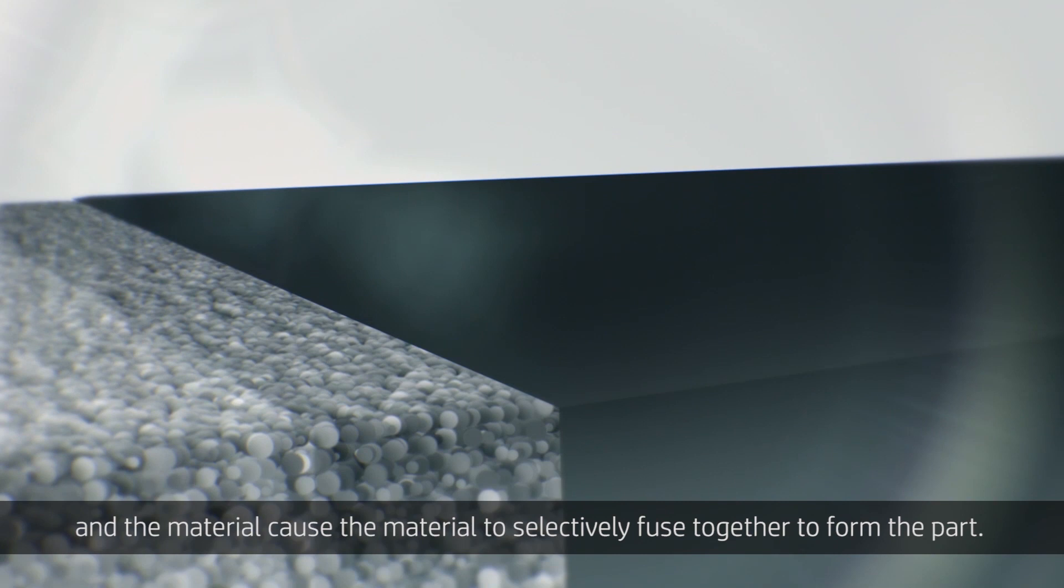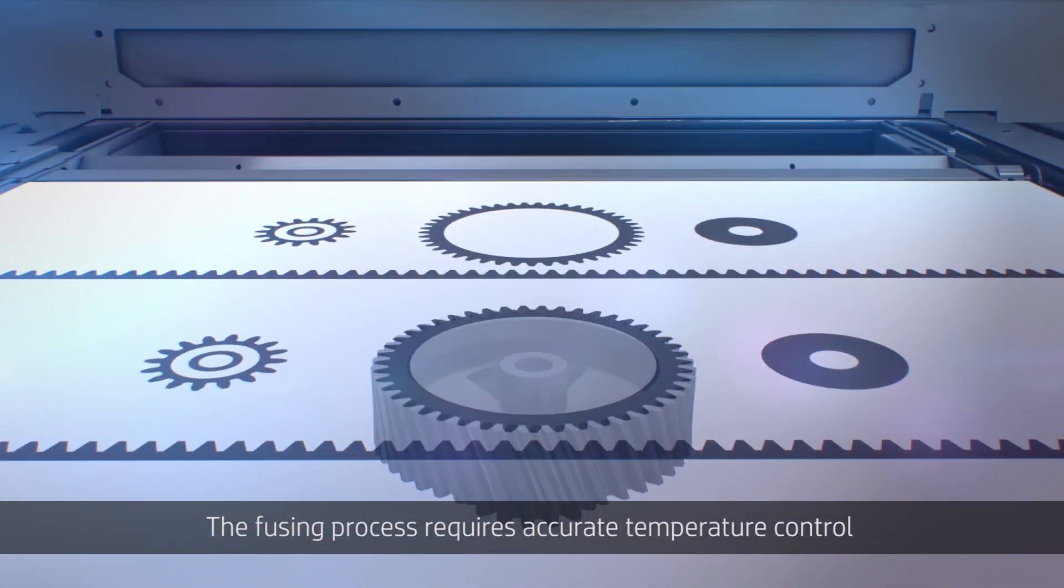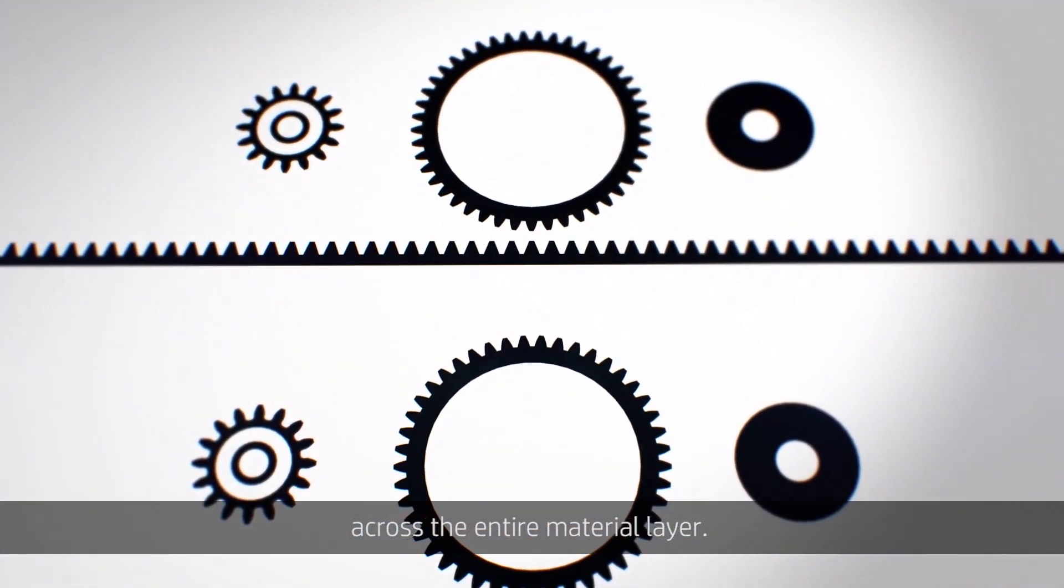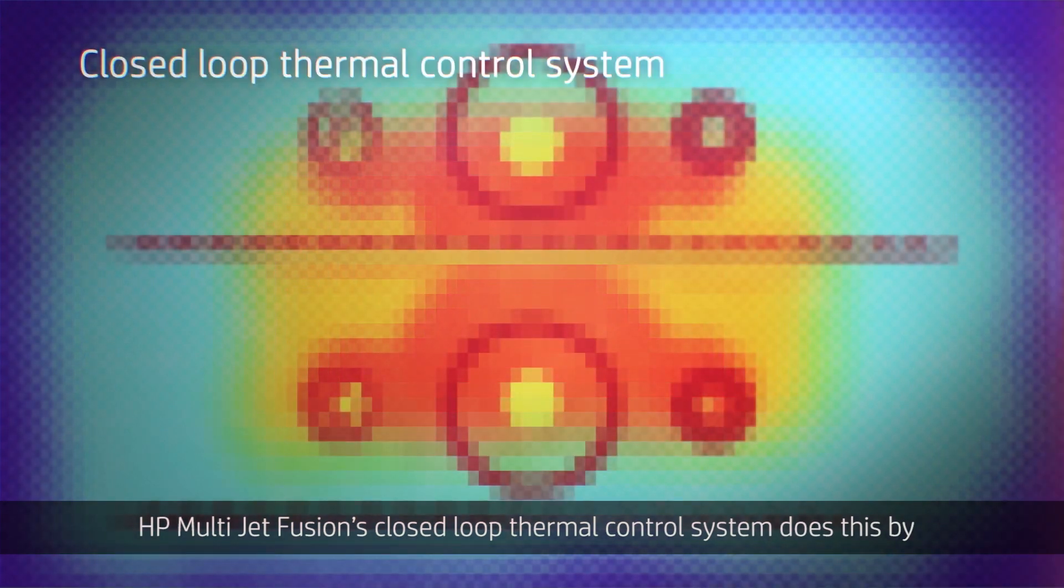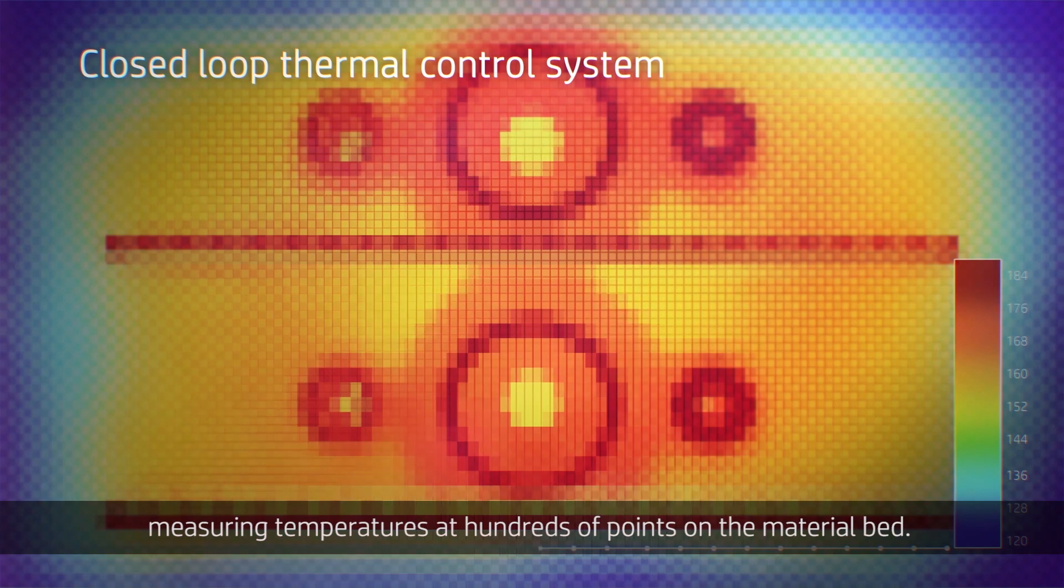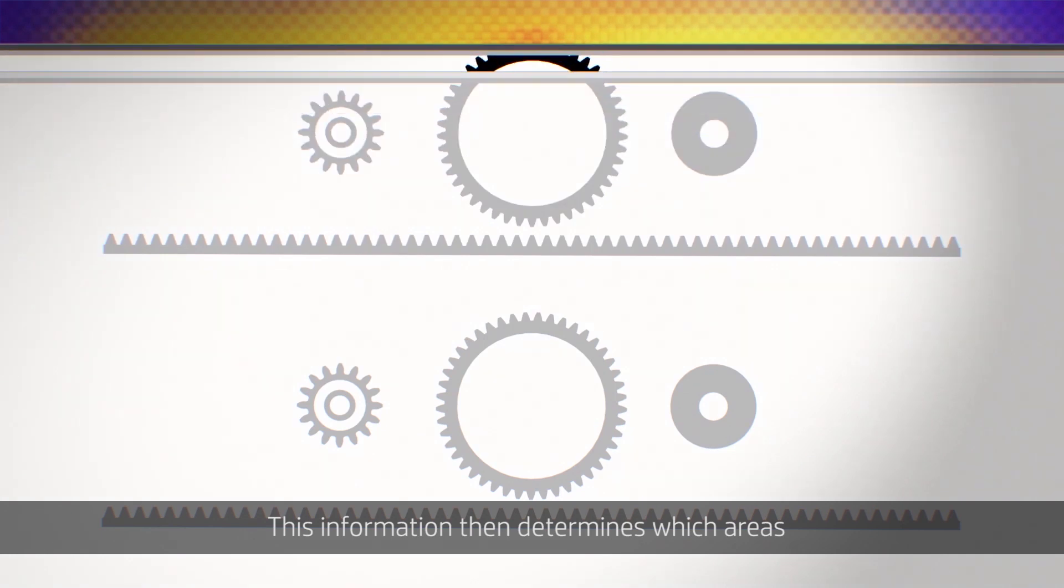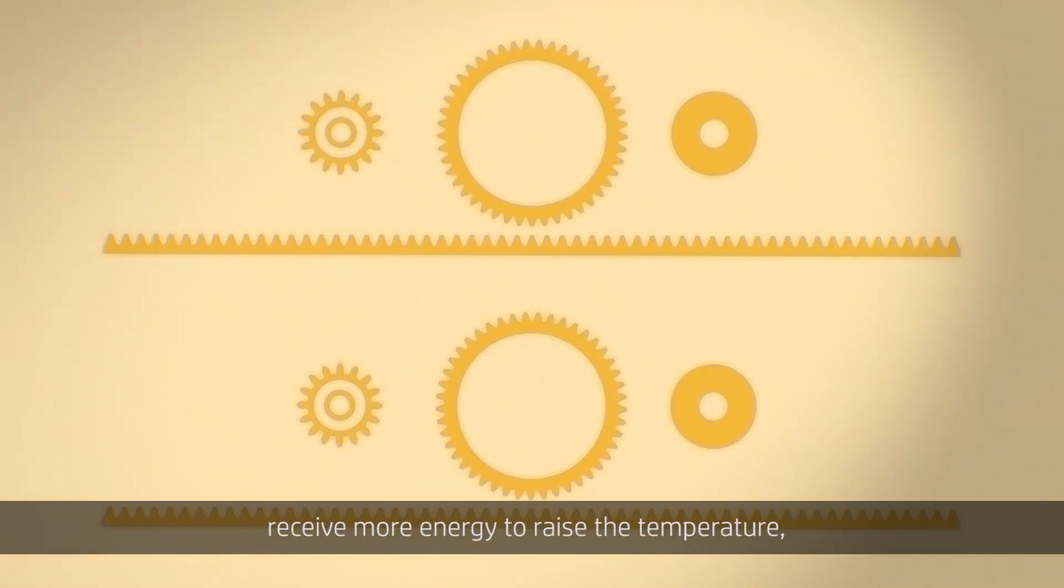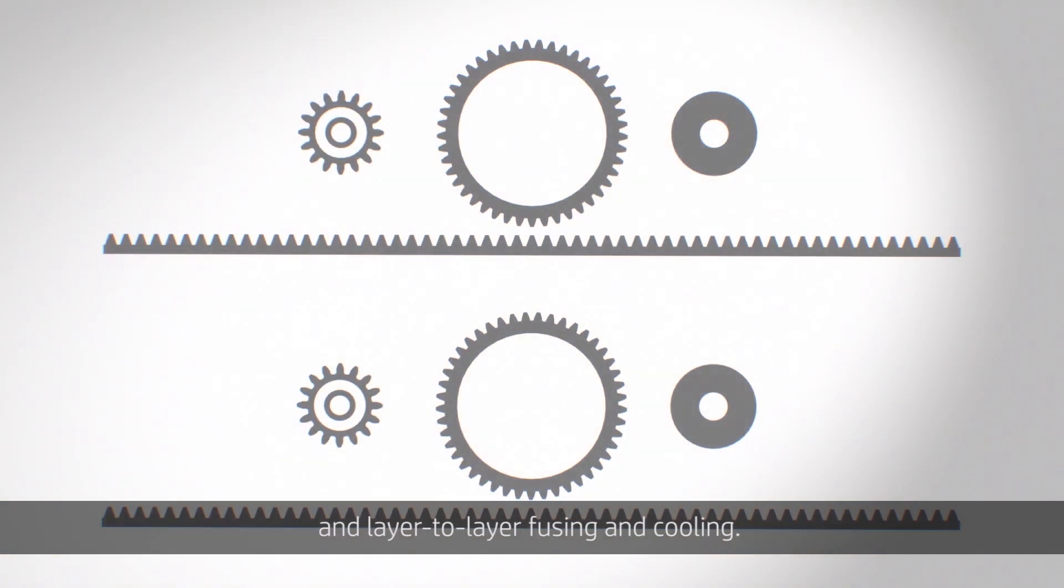The fusing process requires accurate temperature control across the entire material layer. HP Multi-Jet Fusion's closed loop thermal control system does this by measuring temperatures at hundreds of points on the material bed. This information then determines which areas receive more energy to raise the temperature and which areas are cooled, allowing for control of thermal bleed and layer to layer fusing and cooling.